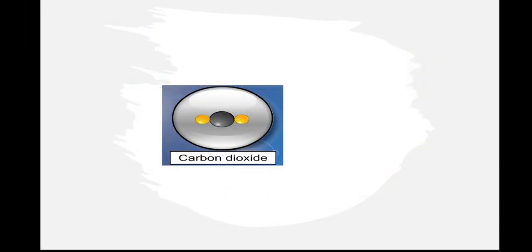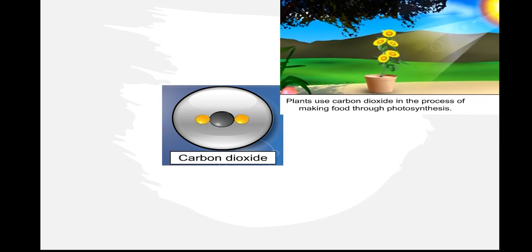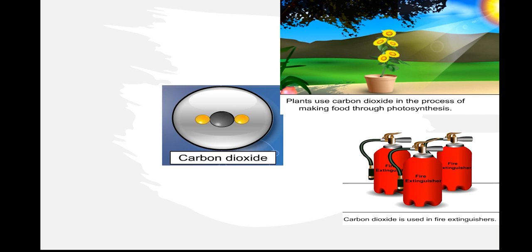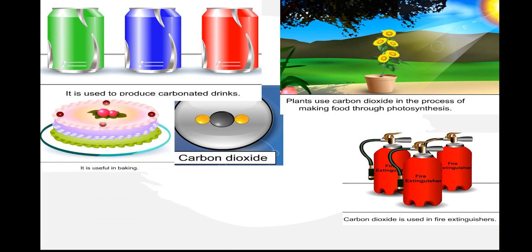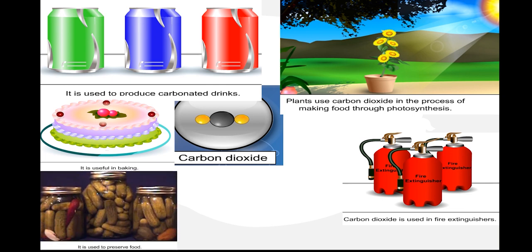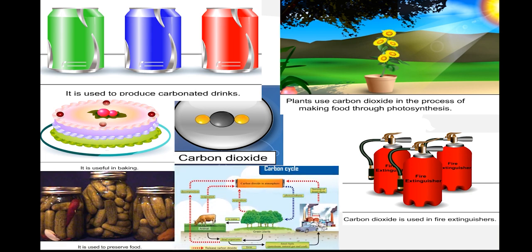Next, let's look at the importance of carbon dioxide in air. The composition of carbon dioxide in air is around 0.03%. Plants use carbon dioxide in the process of making food through photosynthesis. Carbon dioxide is used in fire extinguishers, to produce carbonated drinks, in baking, to preserve food, and is also involved in the carbon cycle.